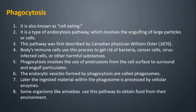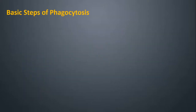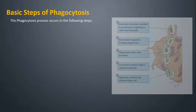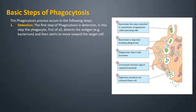Some organisms like amoebas use this pathway to obtain food from their environment. Basic steps of phagocytosis: Detection — The first step of phagocytosis is detection. In this step, the phagocyte first of all detects the antigen, for example a bacterium, and then starts to move toward the target cell.